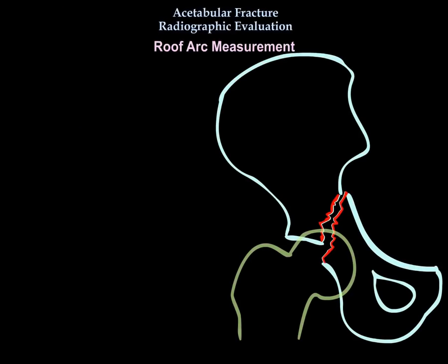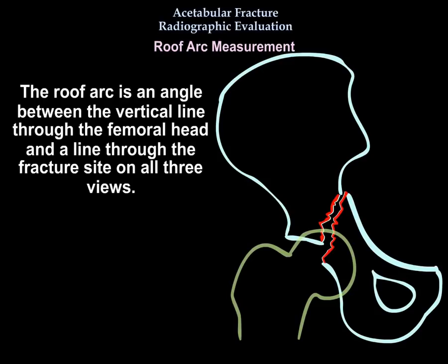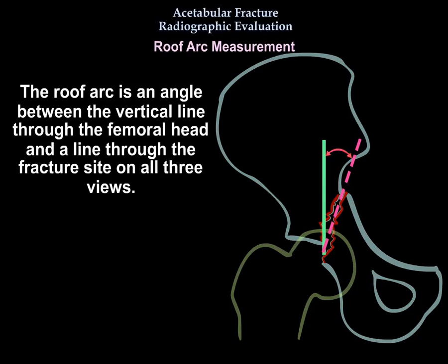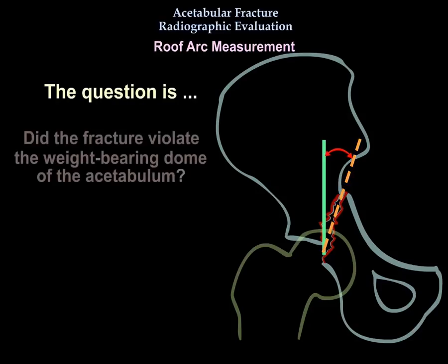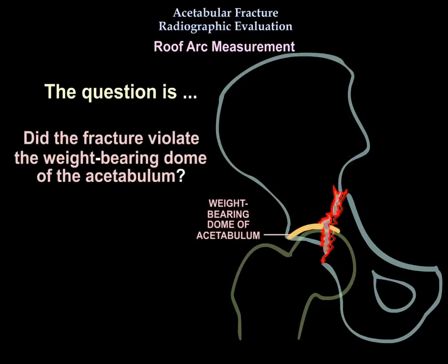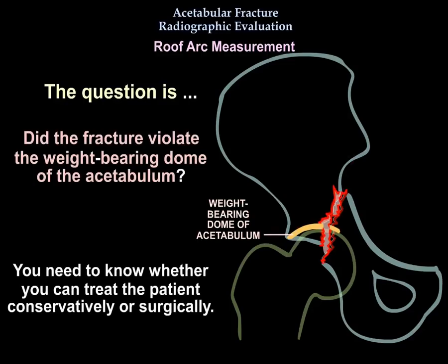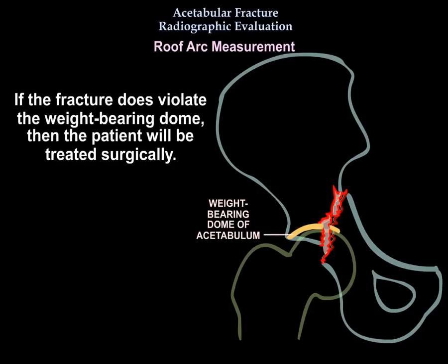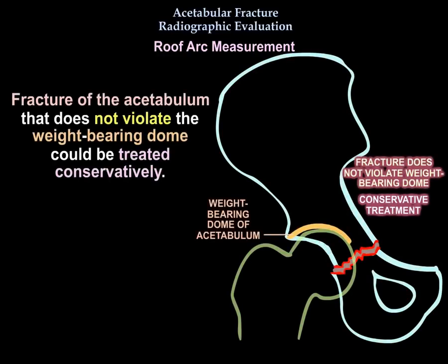The roof arc is the angle between a vertical line through the femoral head and a line through the fracture site, measured on all three views. The key question is whether the fracture line violates the weight-bearing dome, because this determines if the patient is treated conservatively or surgically. If the fracture violates the weight-bearing dome, the patient will be treated surgically; if not, conservative treatment may be appropriate.